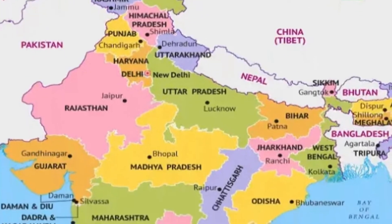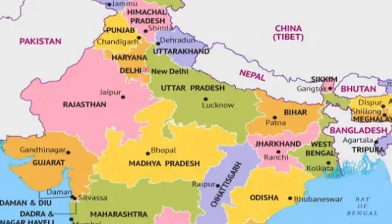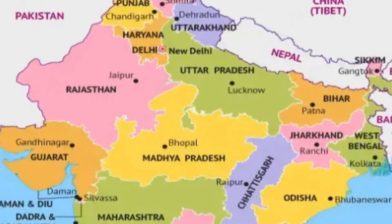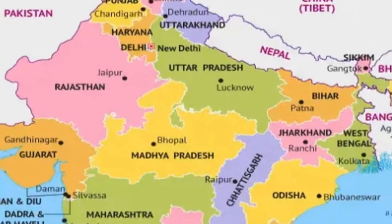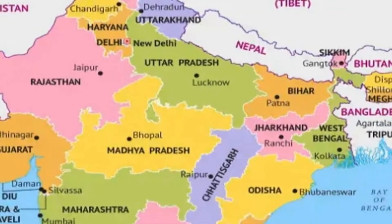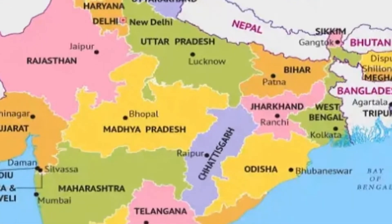Coming further down, we have Madhya Pradesh in the centre — the heart of India. On the left side of Madhya Pradesh we have Gujarat, a very important state in terms of mapwork. On the right side of Madhya Pradesh is Chhattisgarh, which is actually carved out of Madhya Pradesh.